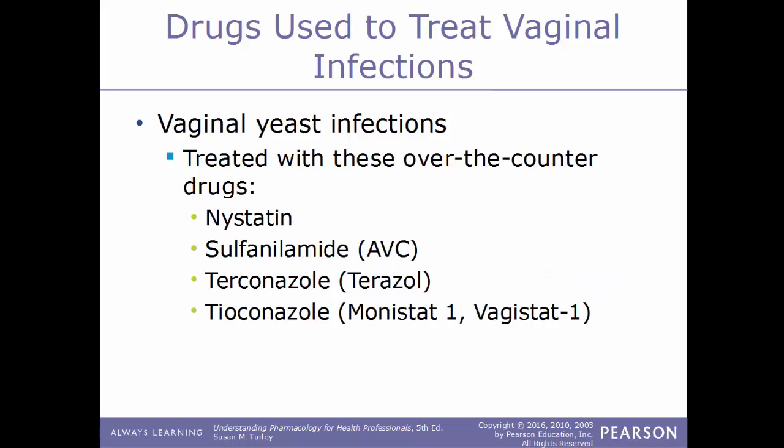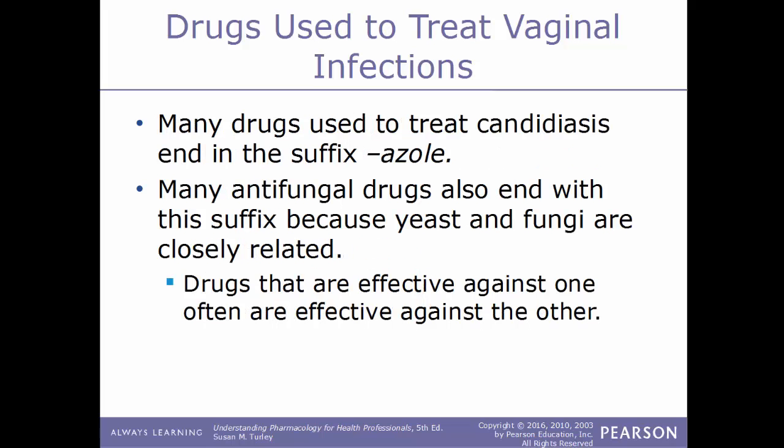Other examples of drugs used to treat vaginal infections include nystatin, sulfanilamide (AVC), terconazole (Terazole), and tioconazole (Monistat-1, Vagistat-1). Many drugs used to treat candidiasis end with the suffix '-azole,' and many antifungal drugs also end with this suffix, because yeast and fungi are closely related and drugs effective against one are often effective against the other.